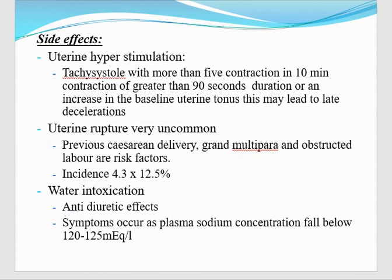Now, what are the side effects of syntocinon? First of all, uterine hyperstimulation — tachysystole with more than 5 contractions in 10 minutes. It means it is hyperstimulation. Contraction of greater than 90 seconds duration, or increase in the baseline uterine tonus — this may lead to late decelerations. So this is a side effect of syntocinon.